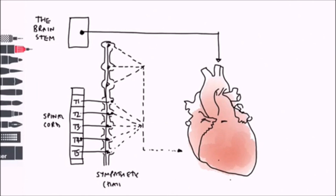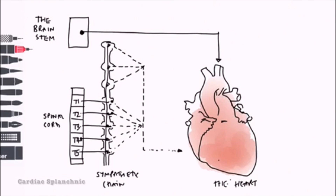The sympathetics leave the spinal cord with the job of speeding up the heart rate and increasing the force of contraction. This occurs through cardiac accelerator nerves that leave the sympathetic chain as post-ganglionic fibres and enter into the heart.